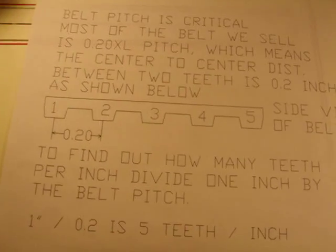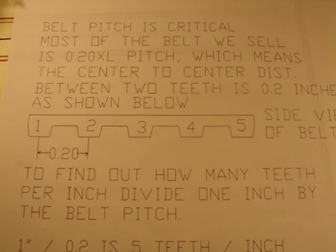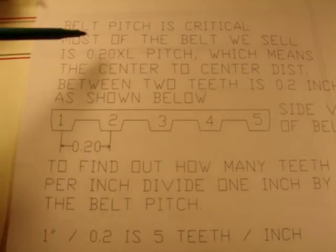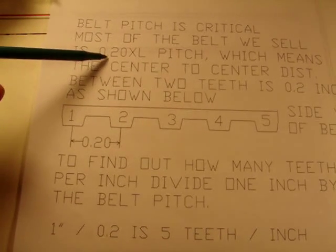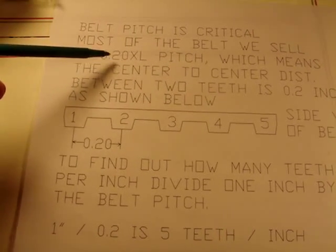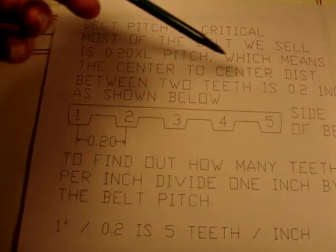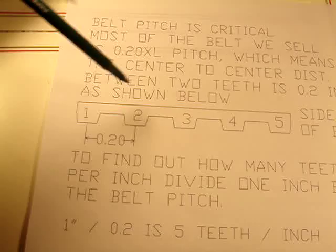The first thing that you have to consider is that the belt pitch is critical. Most of the belts we sell in our store are .020XL, which means that their center distance between teeth is 2 tenths of an inch.